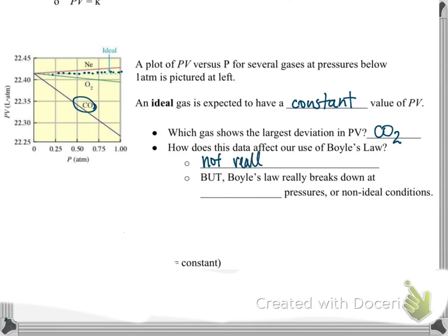But does this affect our use of Boyle's law and the gas laws and the math we're going to be doing? No, it doesn't. How does this data affect our use? It doesn't really affect it at all. Because if you check out these y-axis, the way it's numbered, these are tiny increments. Even CO2 that looks like it's having a huge deviation, it's really not that gigantic of a deviation. So we can still use our math to make assumptions and pretty good estimations of values. Boyle's law really breaks down the most at certain pressures.